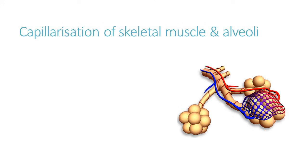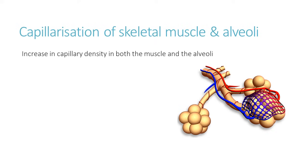Another adaptation and benefit of exercise to the cardiovascular system is capillarisation of skeletal muscle and the alveoli. Capillarisation simply means an increase in the number of capillaries in a given area — an increase in capillary density. This happens both in the muscle and in the alveoli. The benefit is that the amount of oxygen that can be supplied is related to the amount of blood brought to the muscle. With an increased number of capillaries, more blood can flow to the muscle, improving the metabolism of glucose and fats.